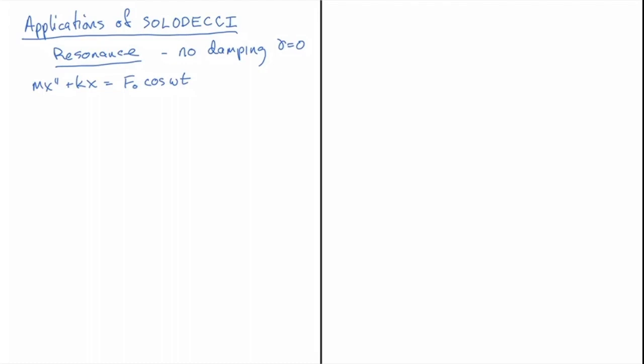Okay, so the first step in solving an inhomogeneous second-order equation with constant coefficients is we calculate the characteristic equation. So that is mr squared plus k equals zero, and that gives us r values of plus or minus i times omega naught, where omega naught is, as it was before, the square root of k over m.